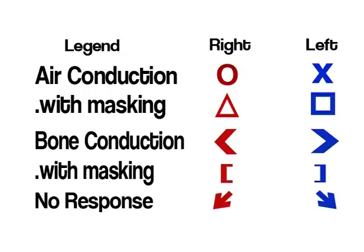Ab main aapko symbols explain karungi jo designated hain for each ear. Jaise ke aap yahan dekh rahe hain — circles hain, triangles hain, greater aur smaller signs hain, bari bracket hai, aur arrow ka sign hai. Laal rang right ear ko represent karta hai, neela rang left ear ko represent karta hai. Air conduction ke liye circles for the right ear, aur left ke liye cross. Masking ke saath triangle for the right ear.